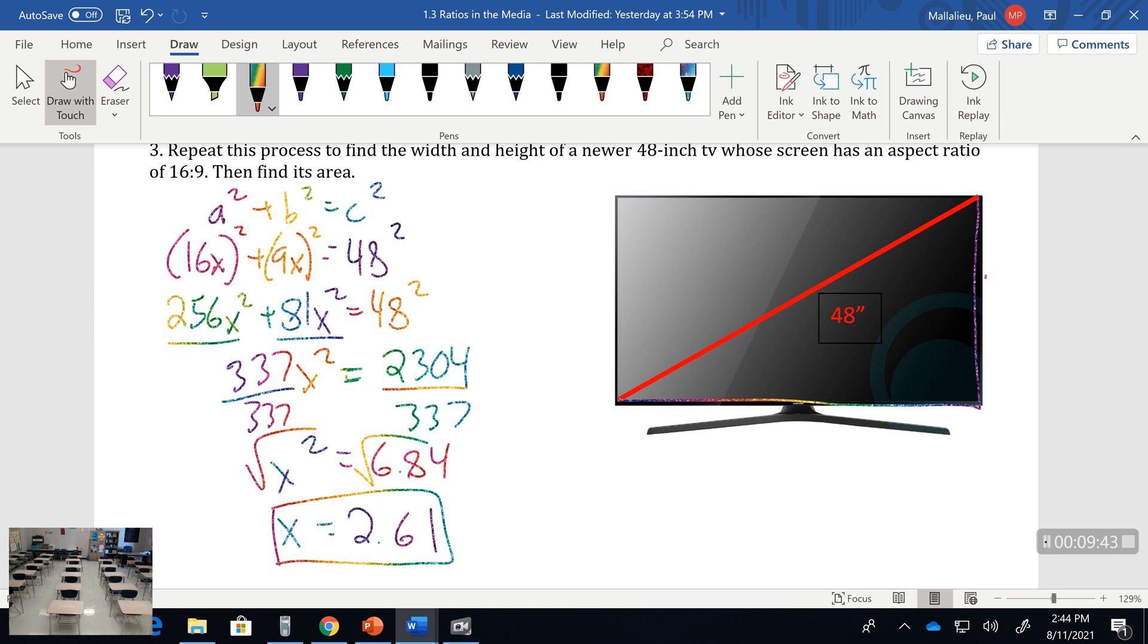That's giving us our x value, but our height is 9X and our width is 16X because we have the aspect ratio of 9 to 16. We plug that in the calculator and see that 16 times 2.61 ends up giving us 41.8 inches for our width.